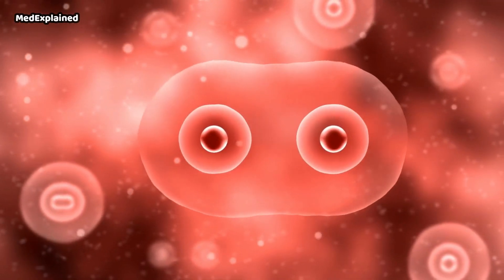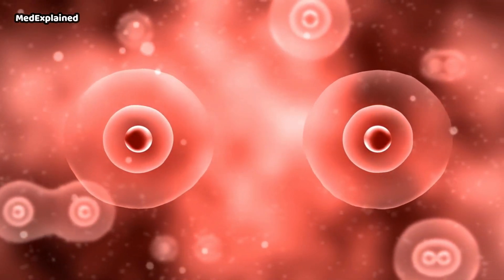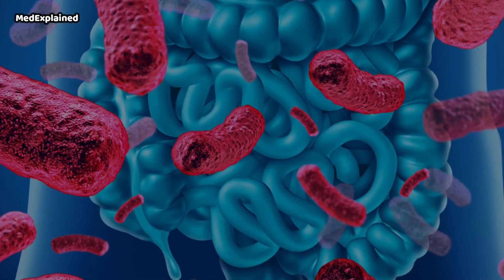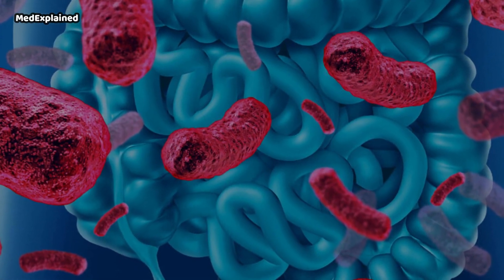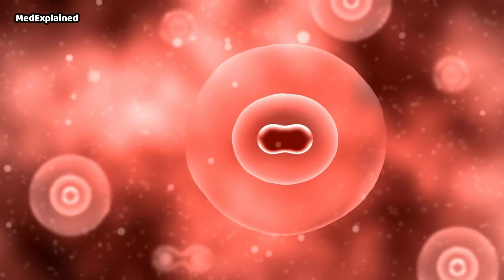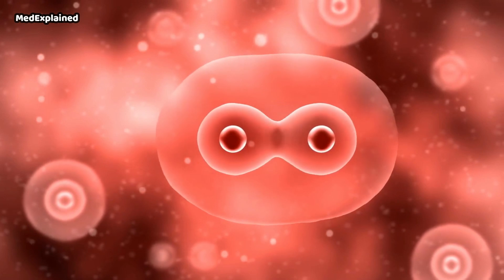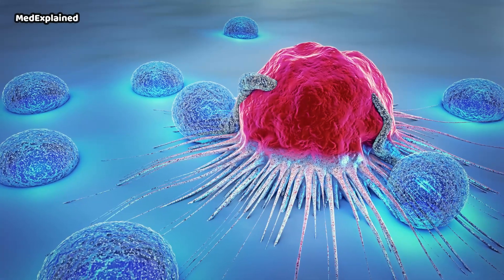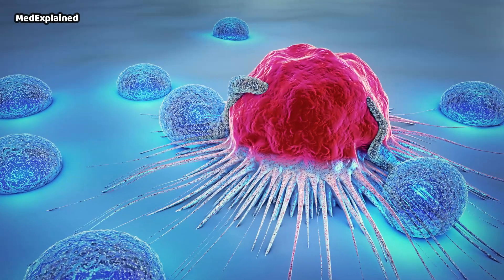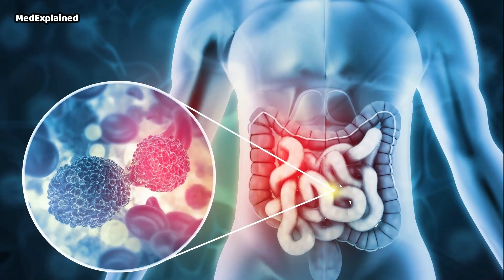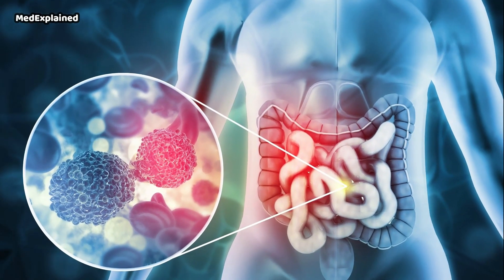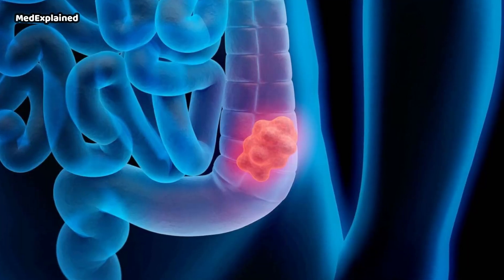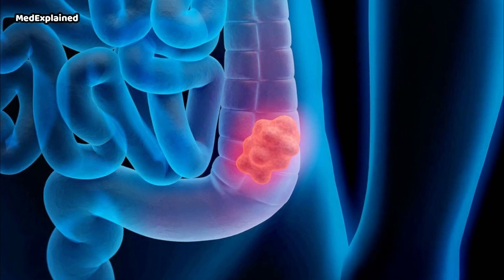A cell's DNA contains a set of instructions that tell a cell what to do. Healthy cells grow and divide in an orderly way to keep your body functioning normally. But when a cell's DNA is damaged and becomes cancerous, cells continue to divide even when new cells aren't needed. As the cells accumulate, they form a tumor. With time, the cancer cells can grow to invade and destroy normal tissues nearby.